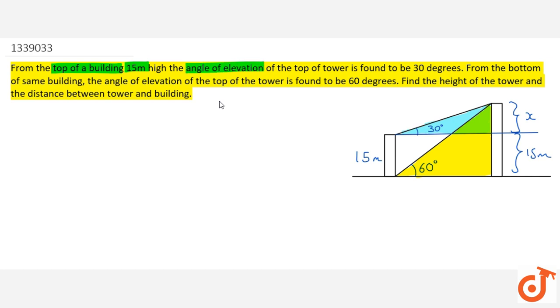The angle of elevation to the top of the tower is found to be 30 degrees. We have made this diagram. This is our building. According to the first statement, we have made this diagram.